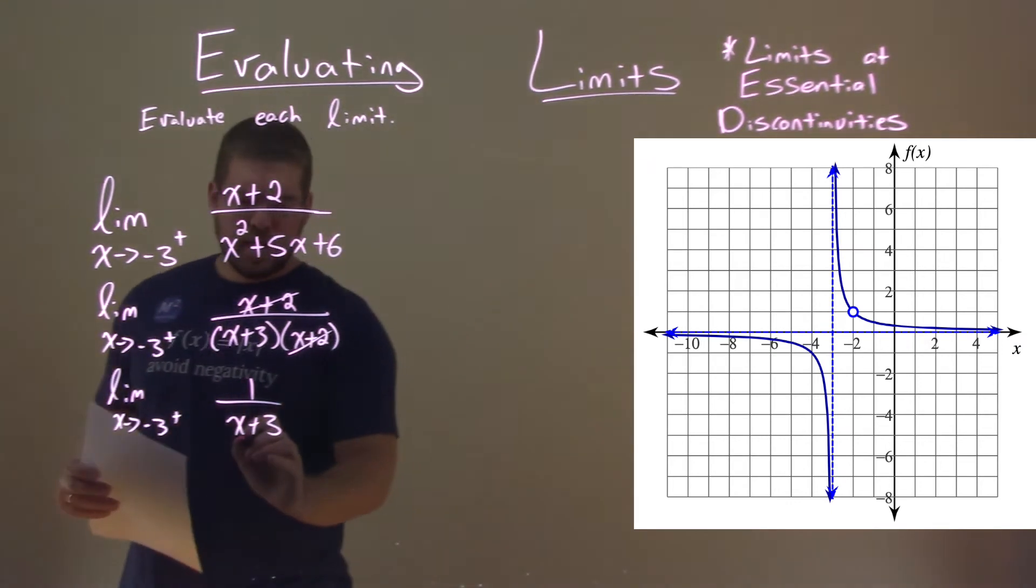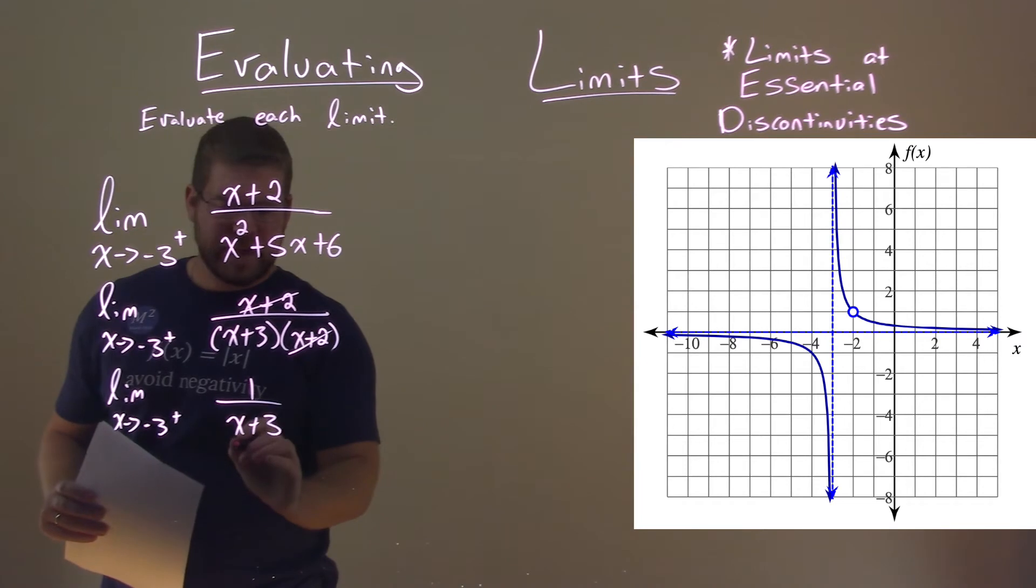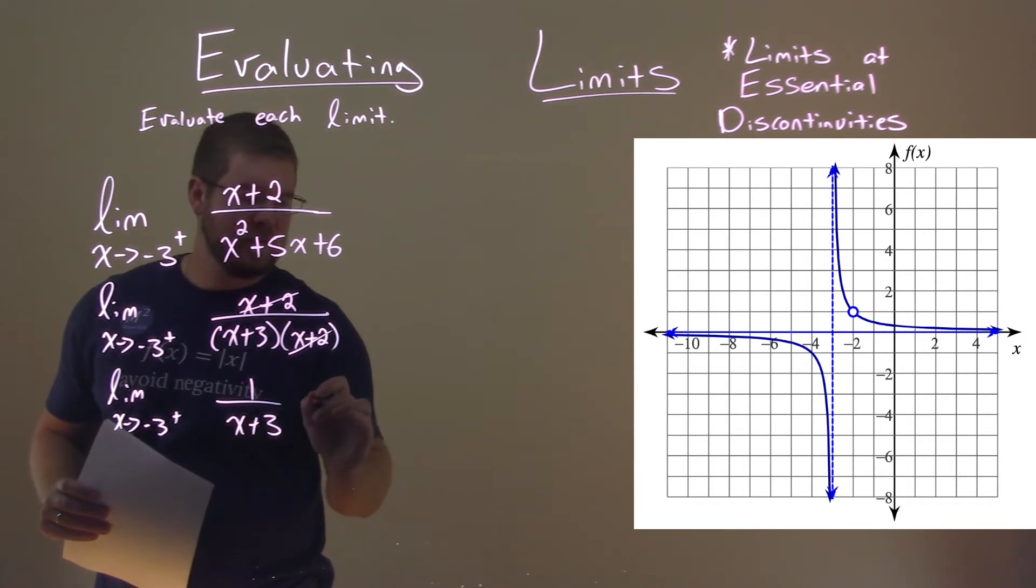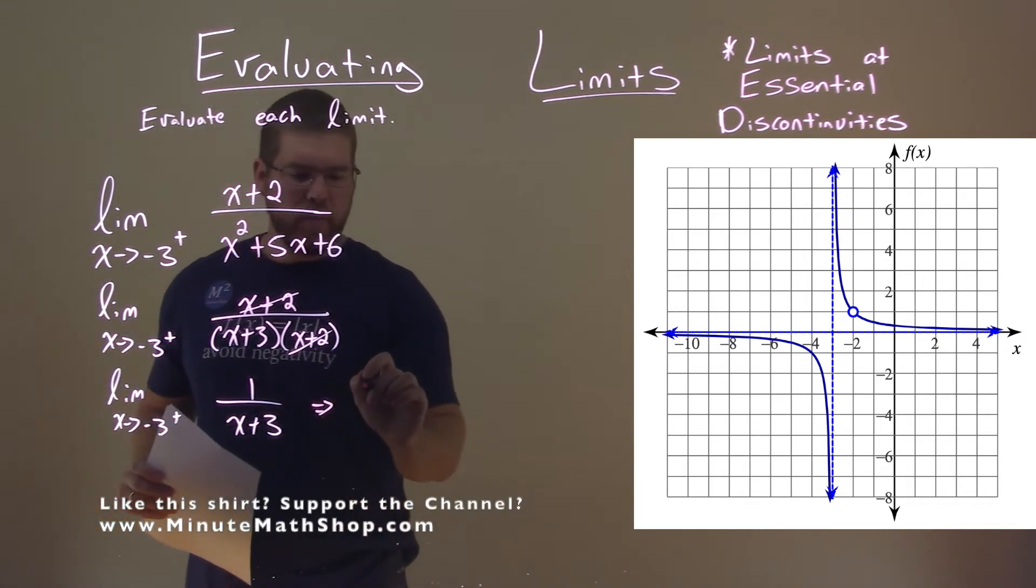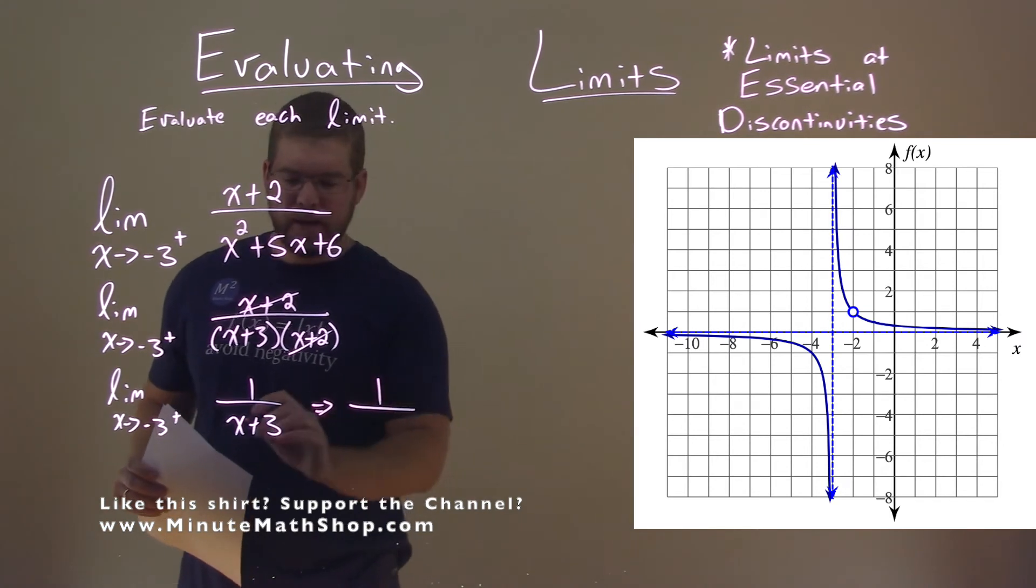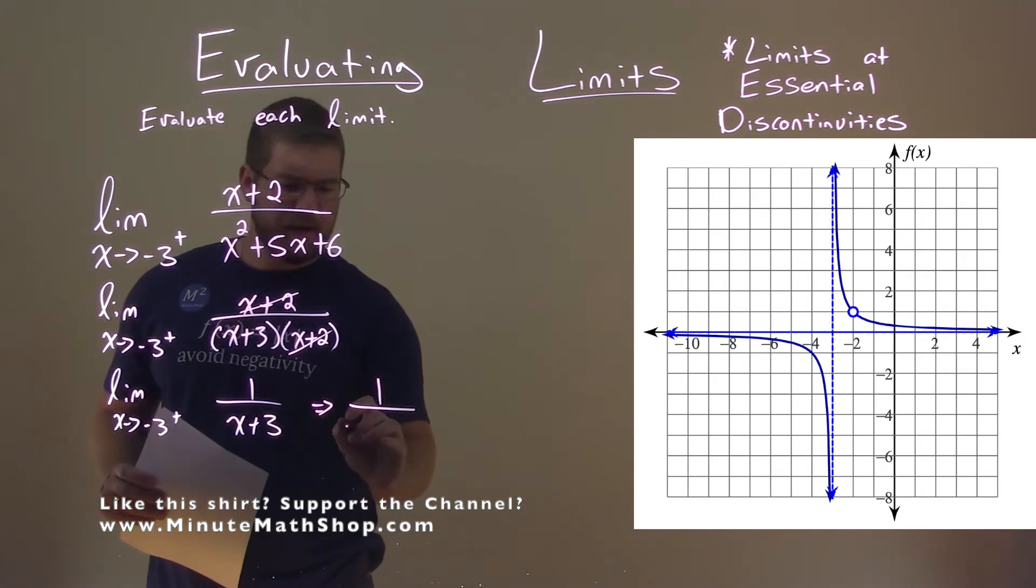So right here, what happens if I put, let's say, negative 2.9? This is not really equal to, so I'm going to use approximately. We take that 1 over, and instead of x being negative 3, let's try negative 2.9 plus 3.